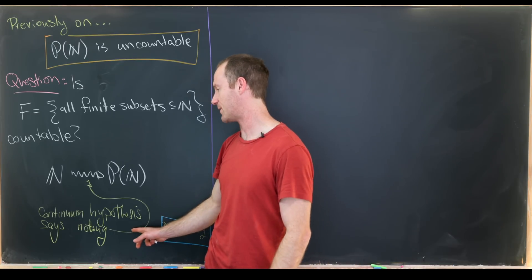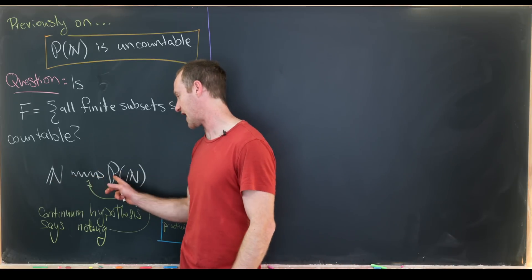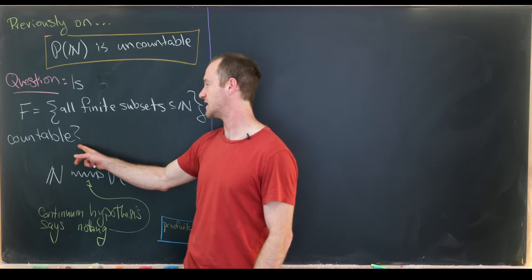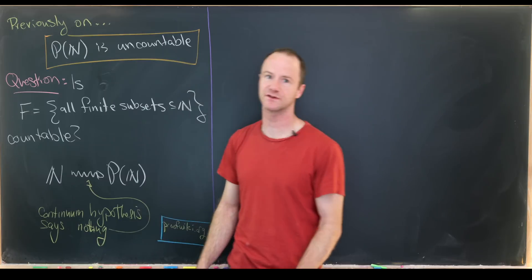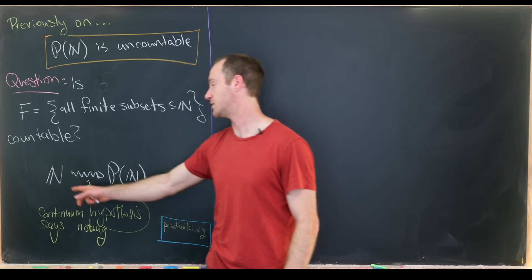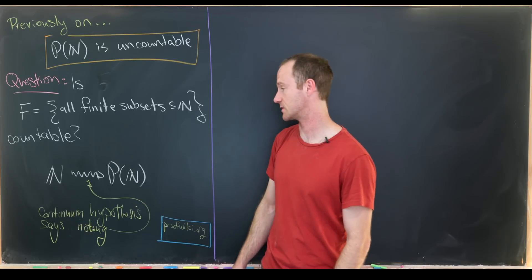The continuum hypothesis says that there are no cardinalities between the natural numbers and the power set of the natural numbers. So if we show it's countable, by definition that means it's equinumerous with the natural numbers. But if it's not countable, then it must be equinumerous with the power set of natural numbers.